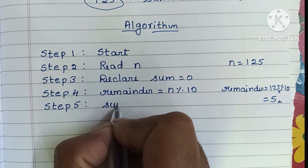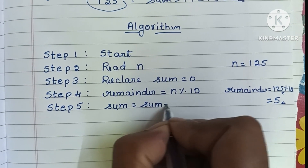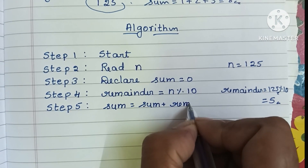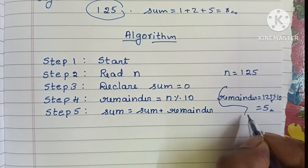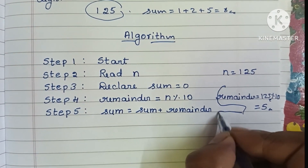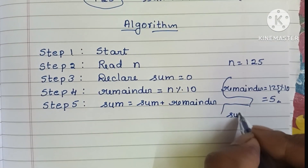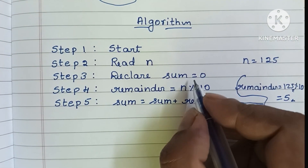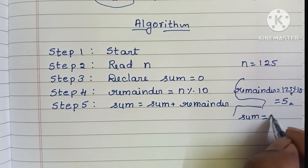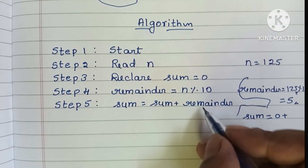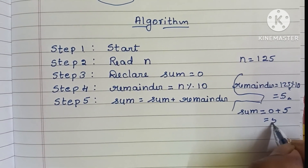In step 5, we find sum = sum plus remainder. The initial value of sum is 0, so sum becomes 0 plus 5, which equals 5.